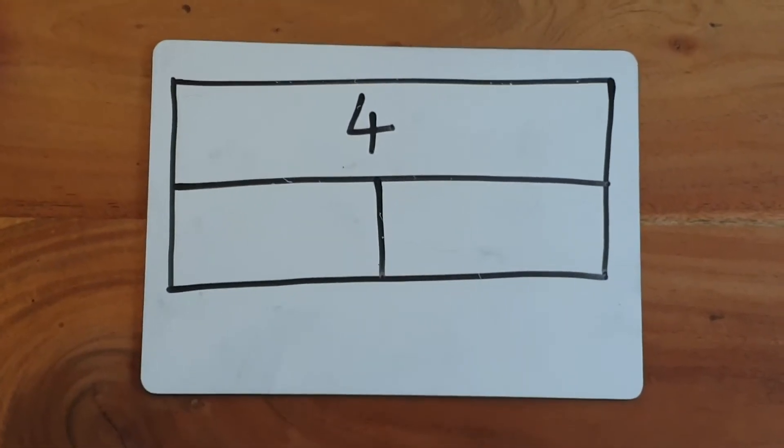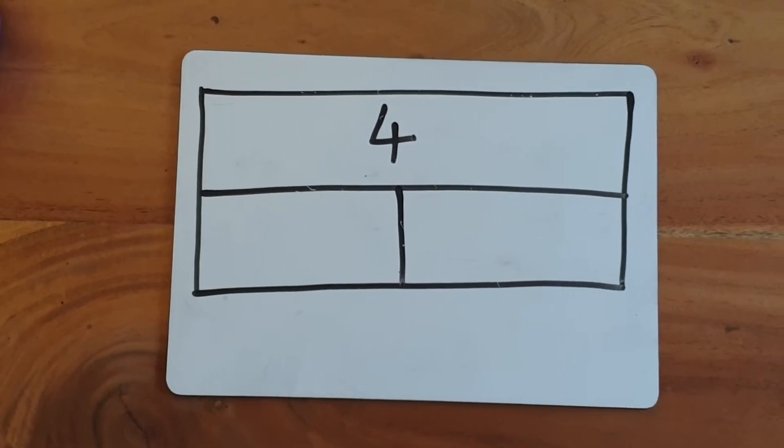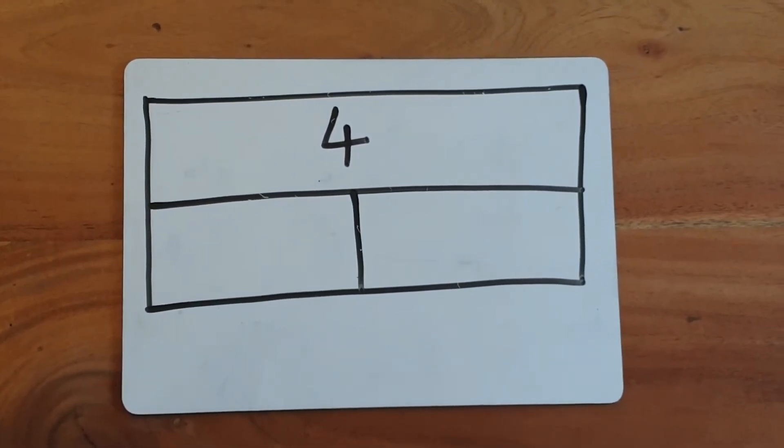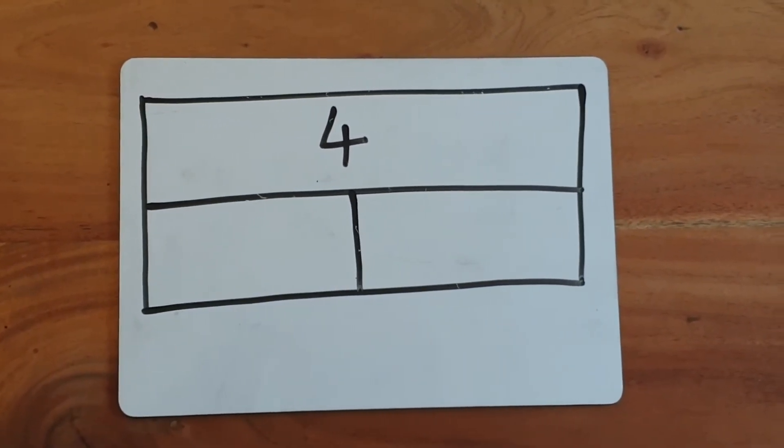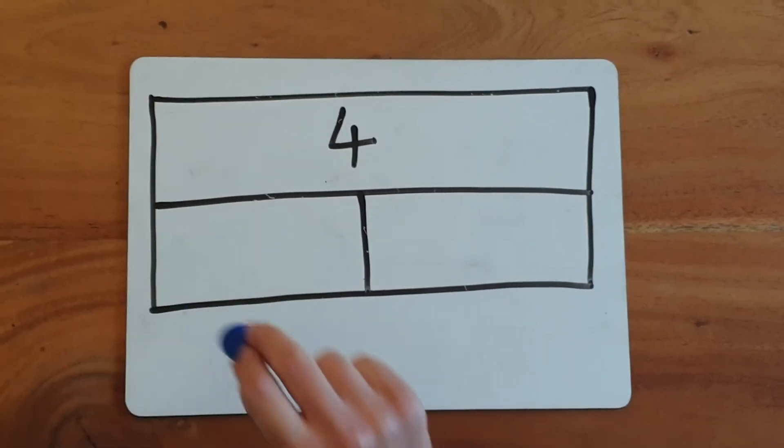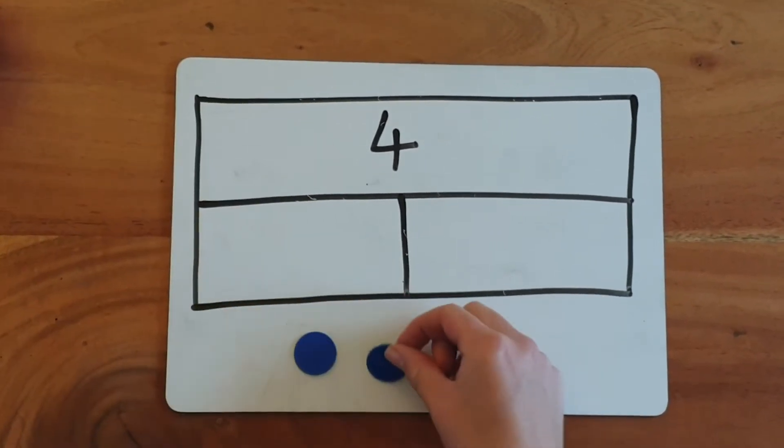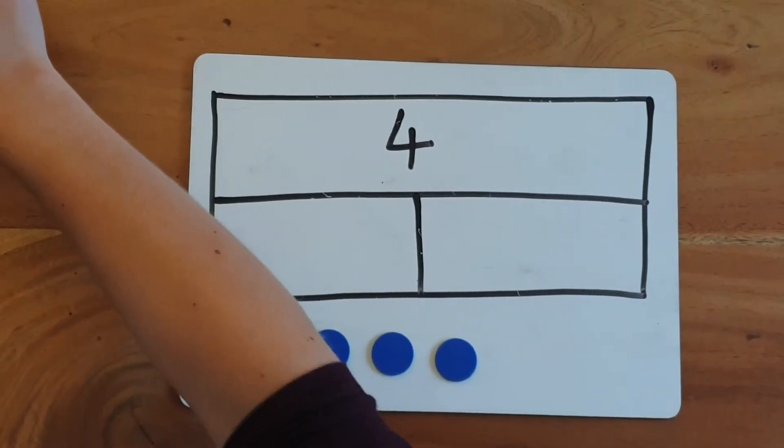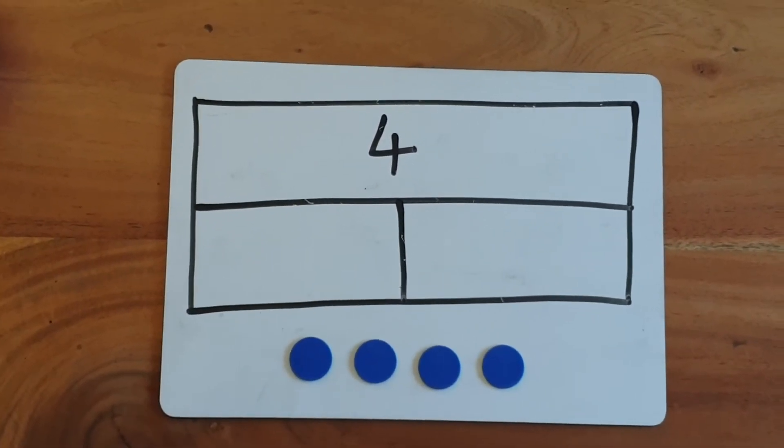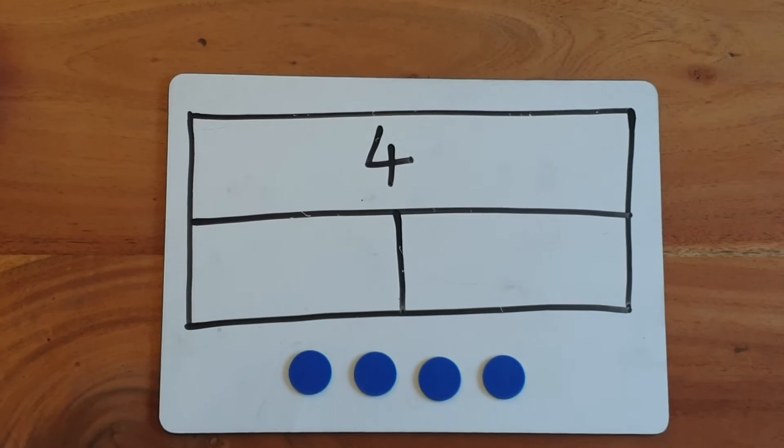So we are going to share the number four into two equal groups. I'm going to get four counters. You could use toys if you'd like to. One, two, three, four.